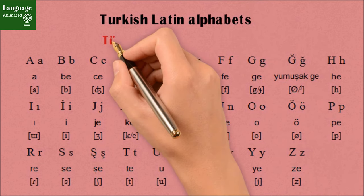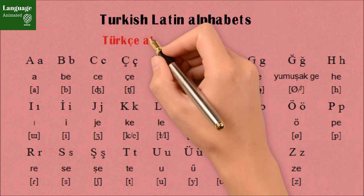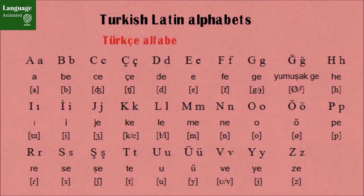Now Turkish is written in Latin alphabets since 1920, and it is called the Turkish alphabet. The Turkish language has 29 letters and they look the same as English letters, but there are some different letters than English.